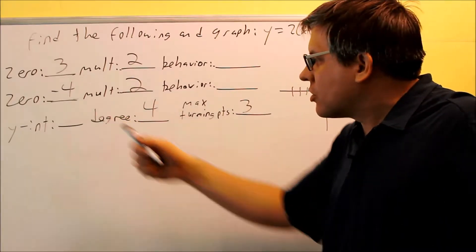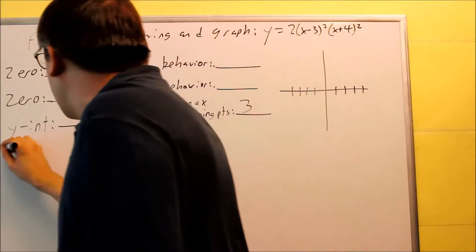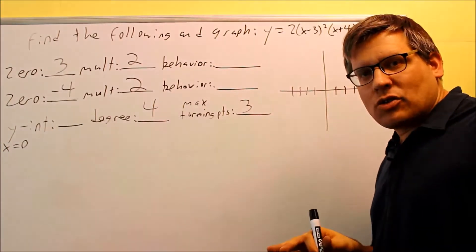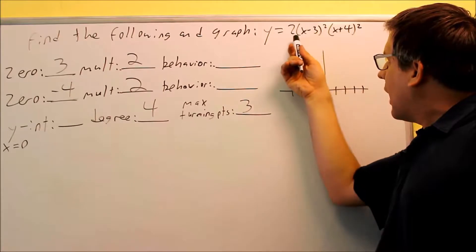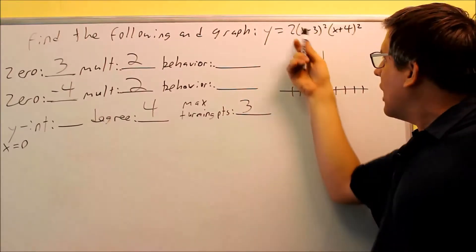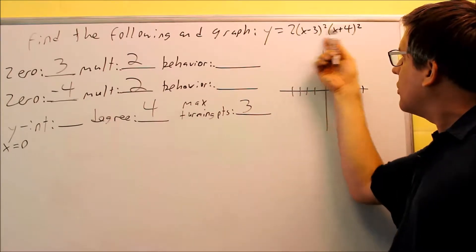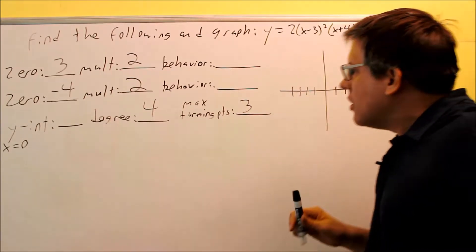Next, we want to do the y-intercept. The y-intercept is where you put in a 0 for x. It's not going to automatically be 0 on this one, because I don't have an x on the outside. If you have an x in front of everything, then yeah, that's going to cancel and give you a 0. But in this case, we have to put 0 in for each of these.